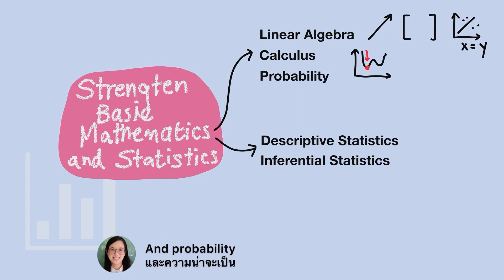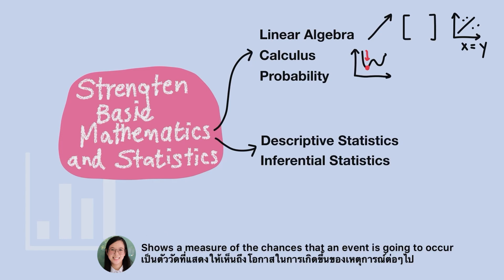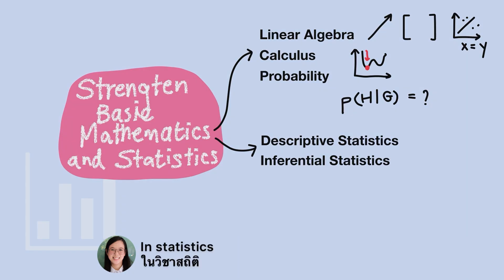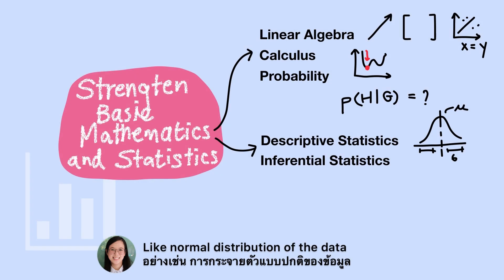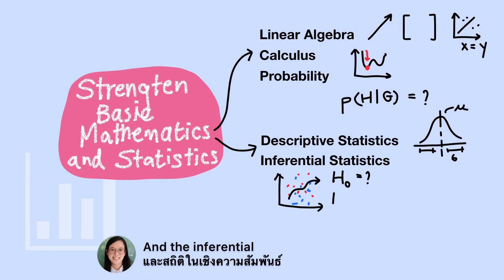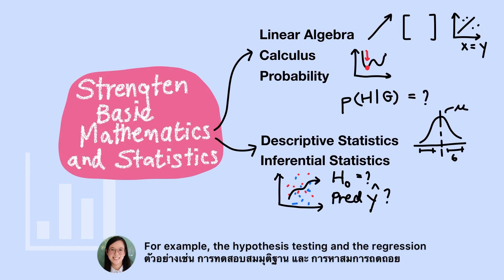Probability shows a measure of the chance that an event is going to occur. In statistics, we will need to understand descriptive concepts like normal distribution of the data, and the inferential, for example hypothesis testing and regression.